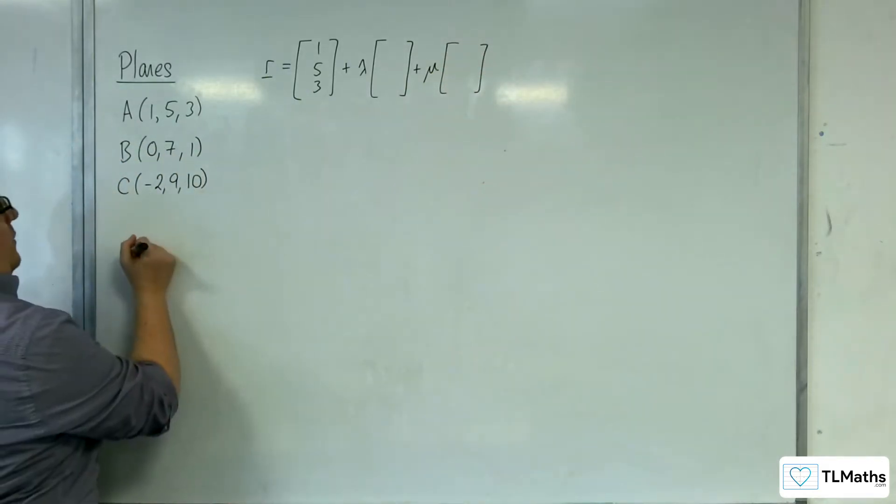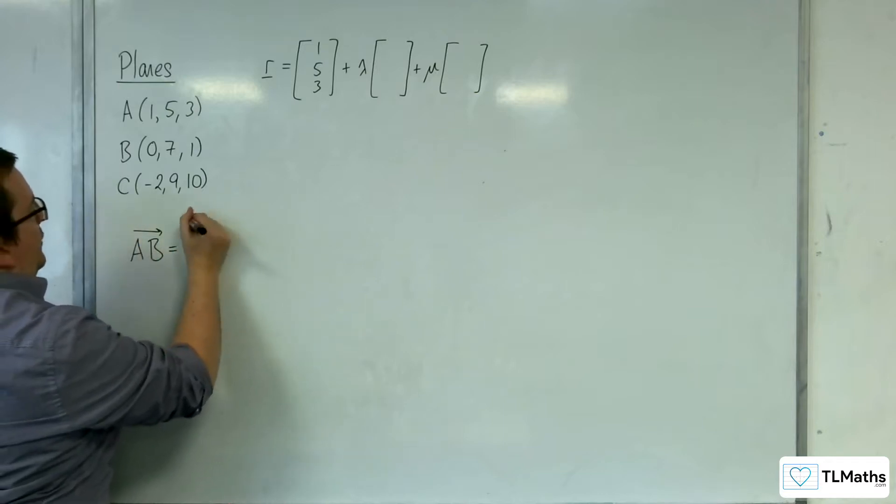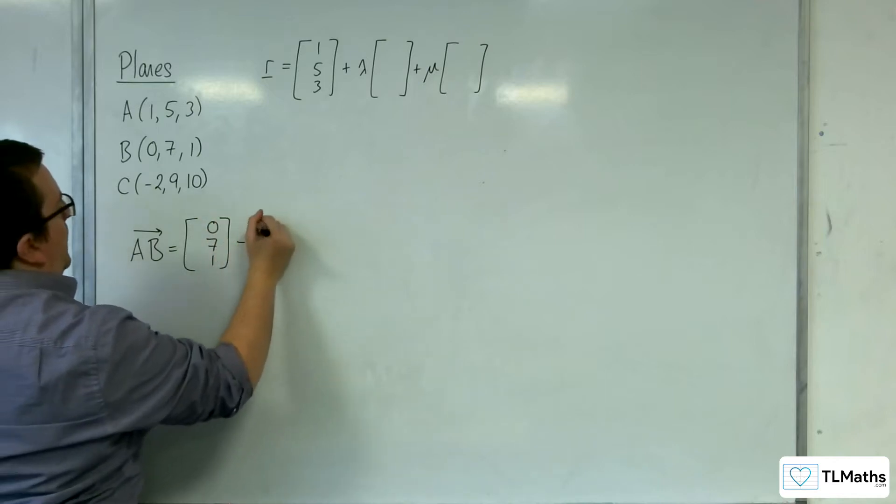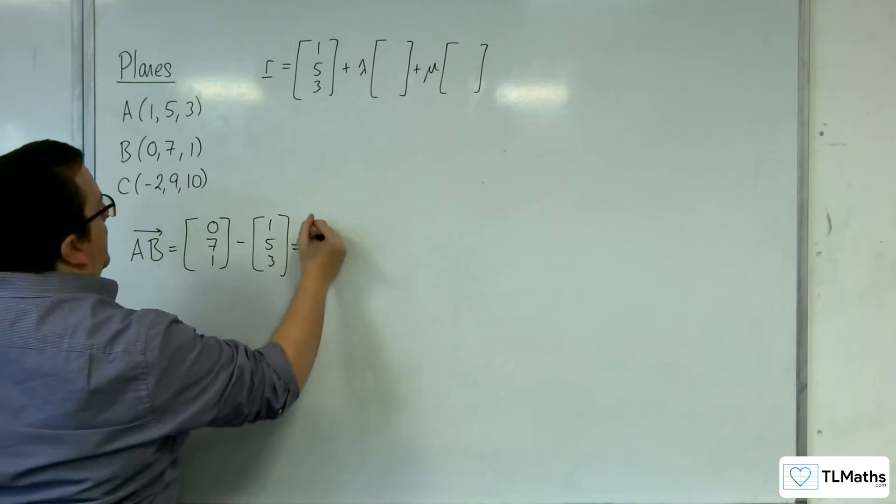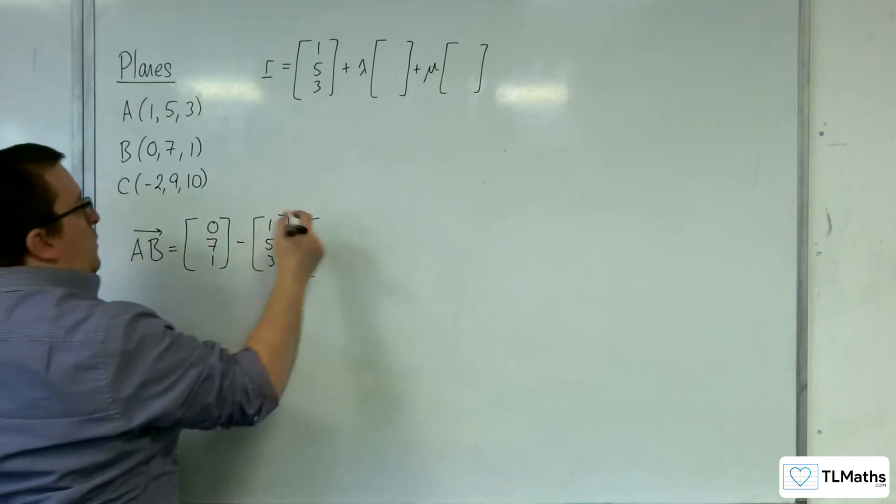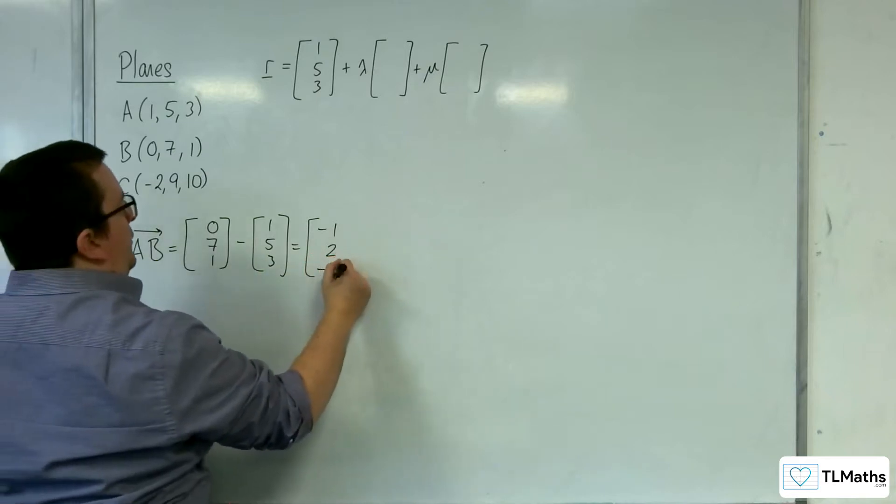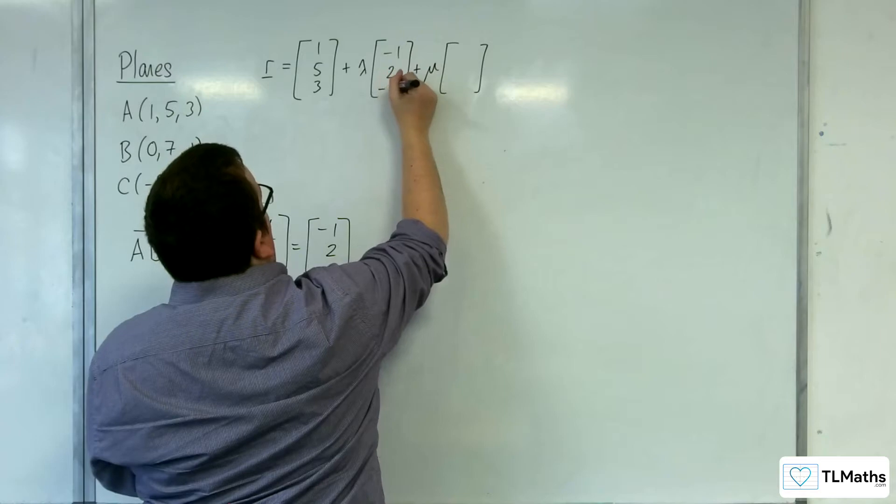Let's choose the first direction vector to be AB. So that's going to be OB, (0, 7, 1), take away OA, (1, 5, 3). And so, we've got 0 take away 1, so minus 1, 7 take away 5 is 2, and 1 take away 3 is minus 2. So, (-1, 2, -2).